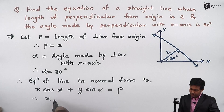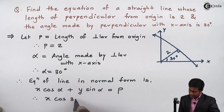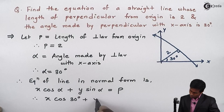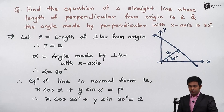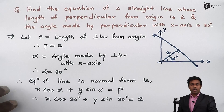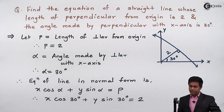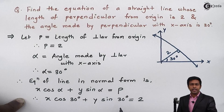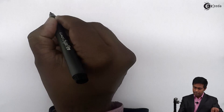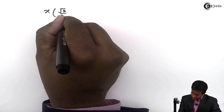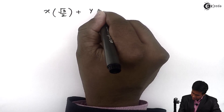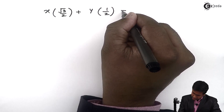Substituting the values, with alpha equal to 30 degrees: x·cos 30° + y·sin 30° = 2. Using the standard values, cos 30° = √3/2 and sin 30° = 1/2, so this becomes x·(√3/2) + y·(1/2) = 2.